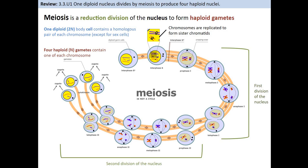So last time we learned the basics of meiosis, and this time we're going to look at each stage in a little more detail. Let's review what we learned. Meiosis is similar in some senses to mitosis — it has the same four steps: prophase, metaphase, anaphase, telophase. One difference is that you have two cycles in meiosis, because you're going from a diploid situation and eventually ending up with haploid.